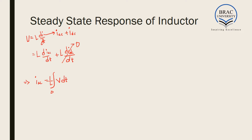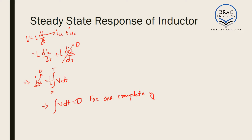For one complete cycle from 0 to T, we know that for AC, the AC current equals zero over a complete cycle. So we can write ∫V dt = 0 for one complete cycle. This relation is very important: the summation of voltage across the inductor is always zero. That is, the inductor gets charged in one part of the cycle and discharged in another part, such that the integration of voltage is always zero.